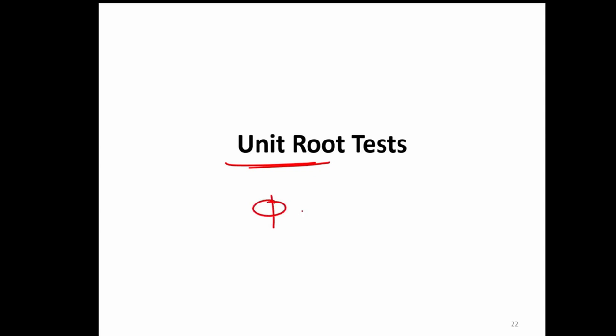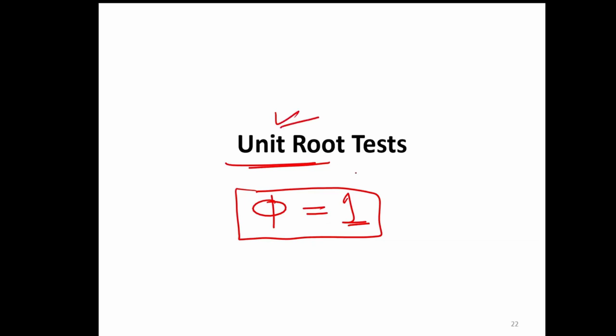This is where we need to understand what is known as a unit root test. The name suggests that unit root means we are only talking about how to find out whether the phi we talked about in the non-stationary series is 1 or not. In a stochastic trend series, if phi is 1, then we can confirm it is the random walk process — and that is what we call a unit root.